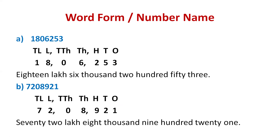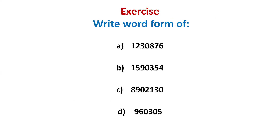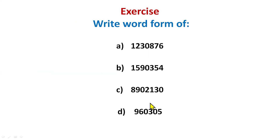Now again it's your time to do some workout. Giving you an exercise — write your answers in the comment section. I'll check your answers and see how many of you wrote correctly. Remember the steps: write the place value chart above the digits starting from the right side, then insert the commas and write the word form of each number.